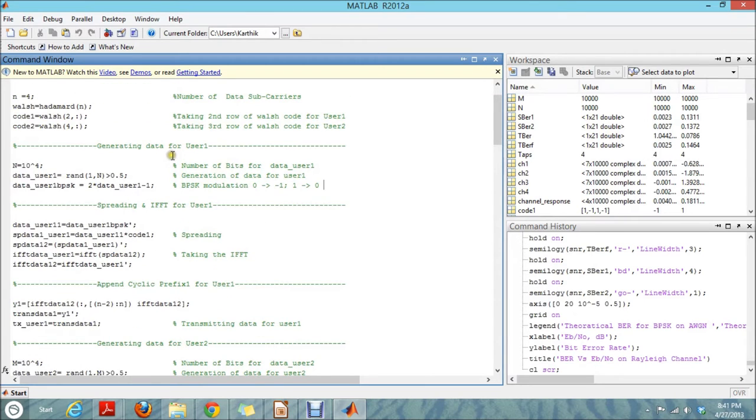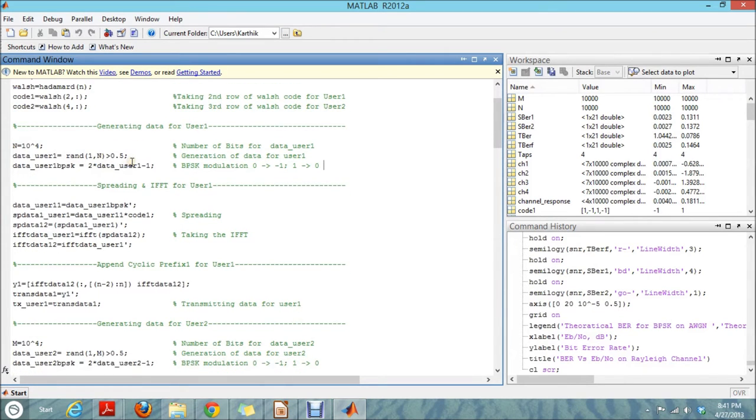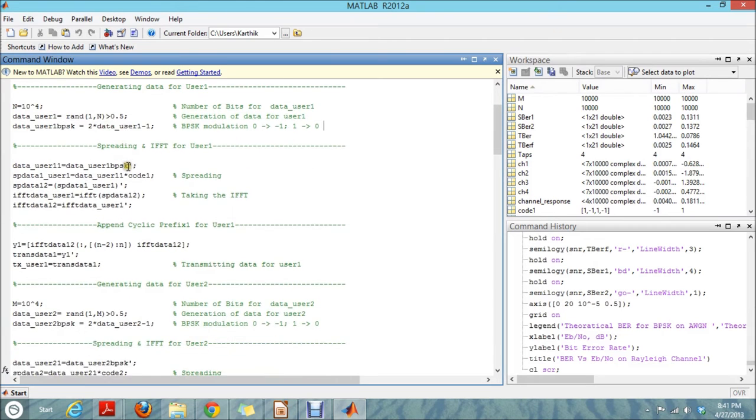And then we're generating the data which is used for user one, which is in thousand bits, randomly. Then we use BPSK modulation. And the spreading of the codes is done by multiplying the user data stream with the code we have generated.